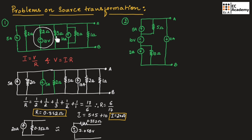Using source transformation we have converted this circuit into a single circuit which has a current source with a resistor, or we can convert that into a voltage source with a single resistor. This is how you can reduce the circuit using source transformation.